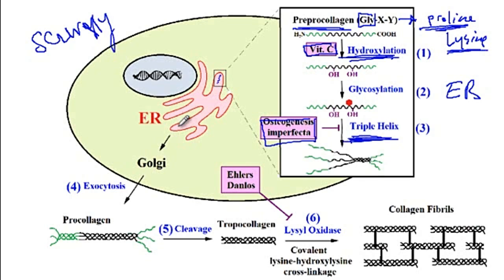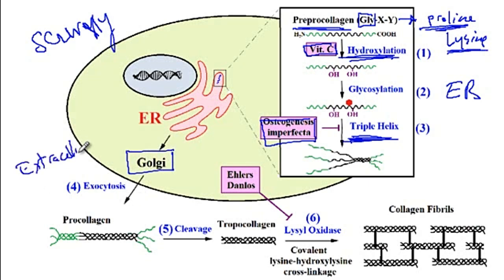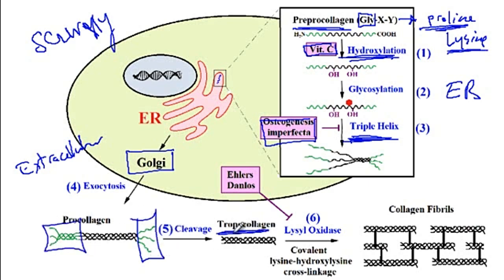Once the triple helix is formed, it is sent from the endoplasmic reticulum into the Golgi apparatus, and from there it will be secreted into the extracellular space. Inside the extracellular space, the procollagen will be cleaved — the edges of the procollagen will be trimmed — after which tropocollagen will be yielded.